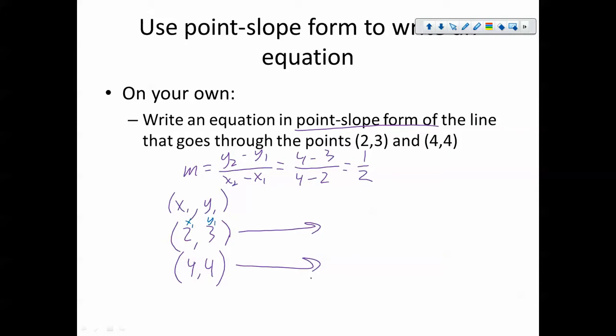This is x one and y one, so this is y minus three equals one half times x minus two, because that's my x one. Or you can have the equation y minus four equals one half times x minus four, and either of those will work.